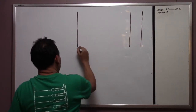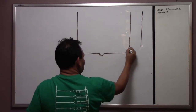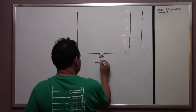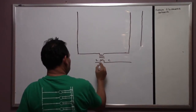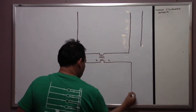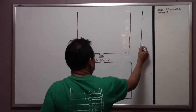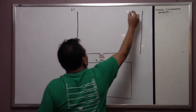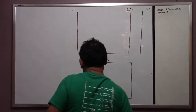We are going to do the same thing with the wiring diagram. We are going to have the transformer — by the way, this is a step-down transformer — and we are going to have line one, line two, and line three.